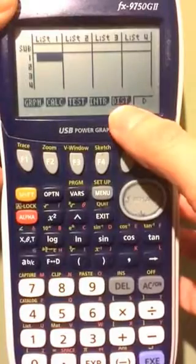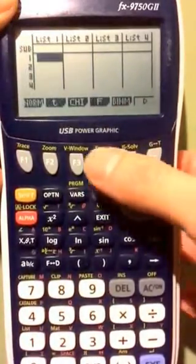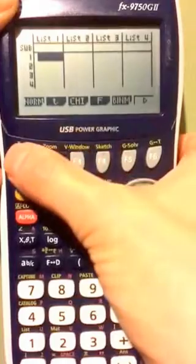We are doing distributions so we want to press F5 there, and then you'll see there's normal just there so press F1.